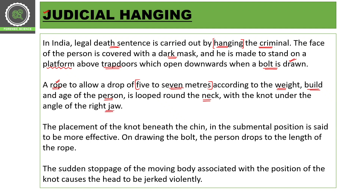The knot is placed just near the jaw, and the placement of the knot beneath the chin — in the submental position — is said to be more effective. The submental position is considered perfect for judicial hanging.